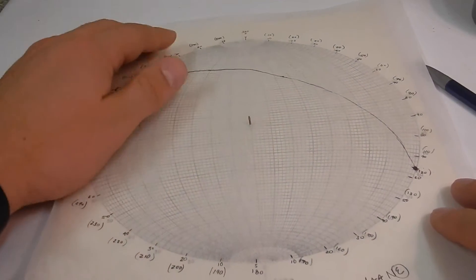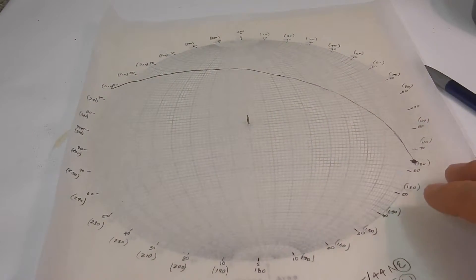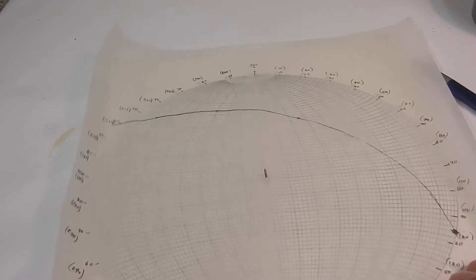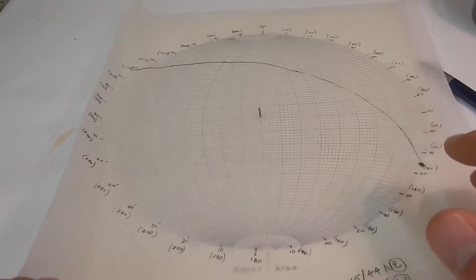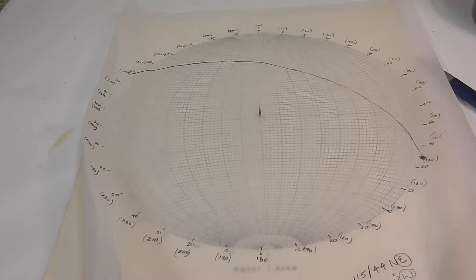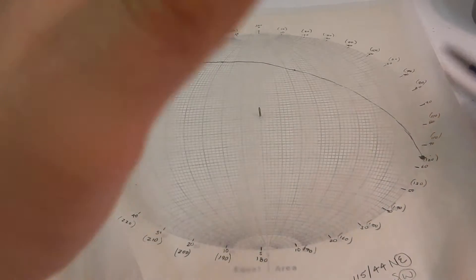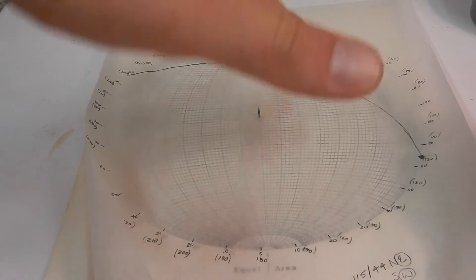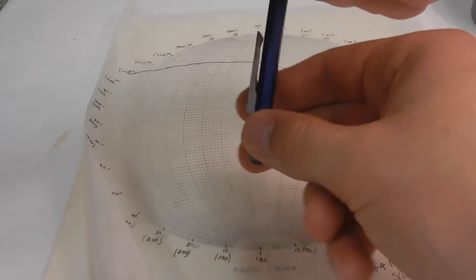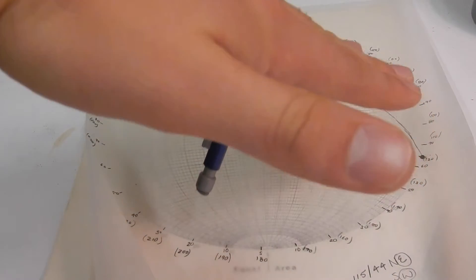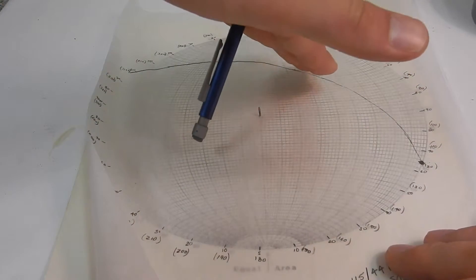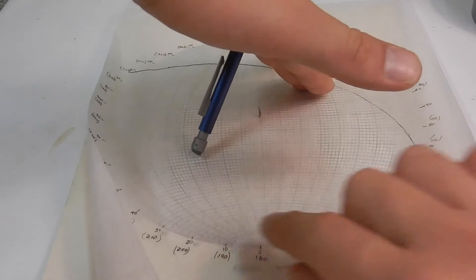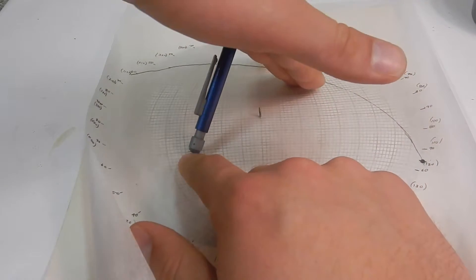So that was plotting a plane on a stereonet. Now we're going to plot our pole from this plane. Remember, our pole goes through our plane at 90 degrees, so if it's dipping like that, our pole should plot somewhere over here.